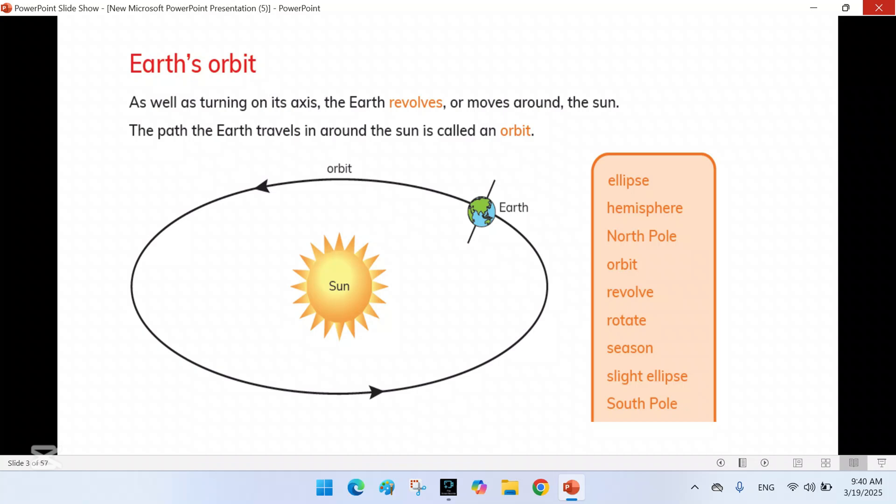Its shape, the time it takes to complete one orbit, the role of gravity, and how the tilt of Earth's axis causes seasons.